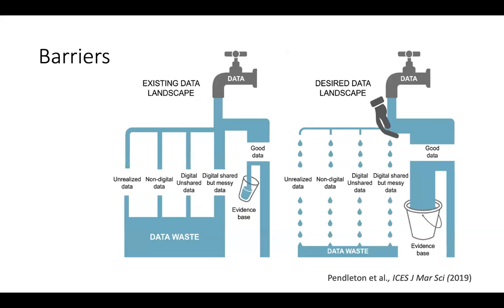This is one idealized version of the barriers that exist to a more idealized vision of what data sharing can look like in the ocean. Right now, our data landscape is heavily siloed. There are certain datasets that are globally accessible and shared very well, but for the large part, much of our data remains inaccessible — locked away in various organizational hard drives in ways that are essentially not interoperable and inaccessible to the broader world.